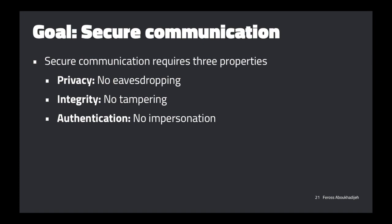Our goal is to have secure communication in the presence of these network attackers. Specifically we want three properties: privacy, integrity, and authentication. Privacy means no eavesdropping, preventing passive attackers from seeing what we're doing. Integrity ensures messages haven't been tampered with — even if you couldn't see the response, if you could tamper with it, the attacker could inject their own JavaScript. Authentication is really important: you need to know you're actually talking to who you think you're talking to. Without authentication, you can't have any of the other properties.